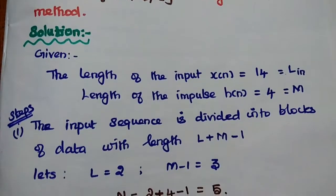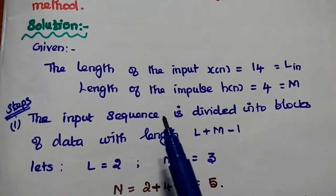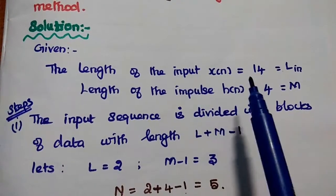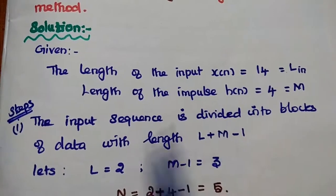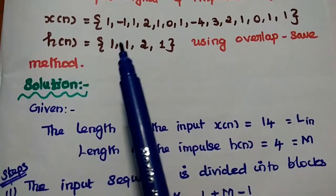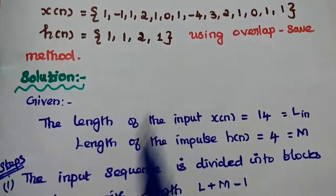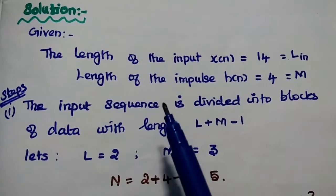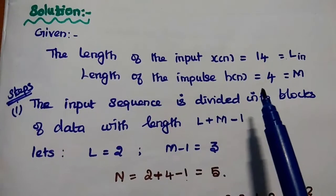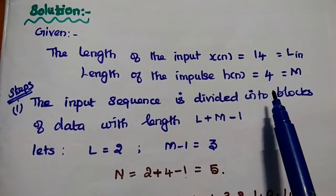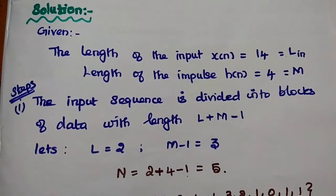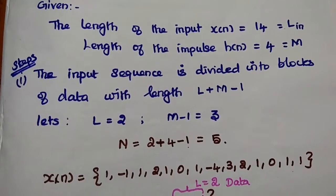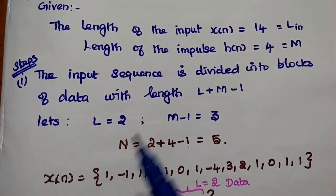From the given data, we know that the length of the input signal x(n) is equal to 14 — there are 14 samples. It's a long duration sequence. The length of the impulse signal h(n) is 4. Here we are going to use the overlap save method to find the output of this filter.